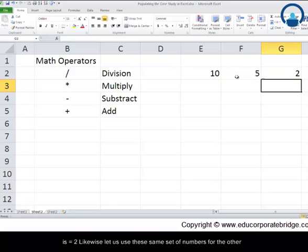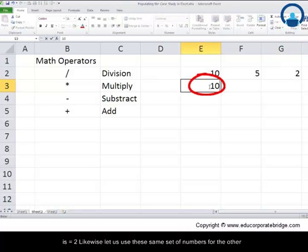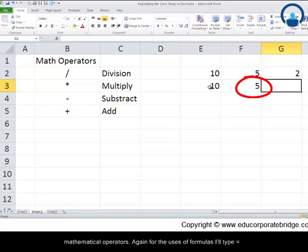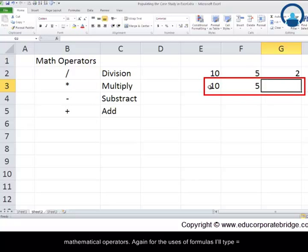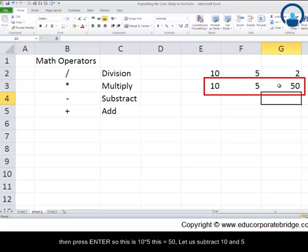So you will find that you have these answers E2 divided by F2 which is equal to 2. Likewise let us use these same set of numbers for the other mathematical operators. For the usage of formulas I will type equal to this time E3 multiplied by F3. The multiplication sign if you are using a regular keyboard would be found on the right hand corner of your keyboard and then press enter. So this is 10 multiplied by 5 which is equal to 50.